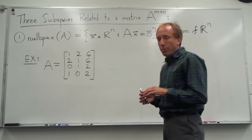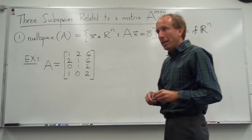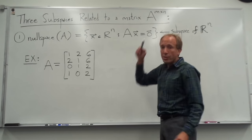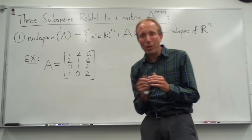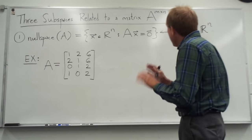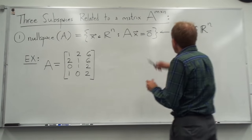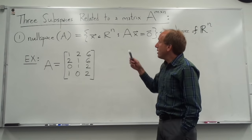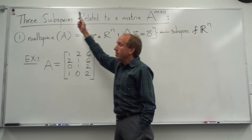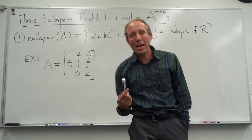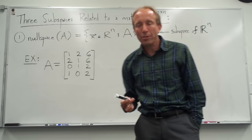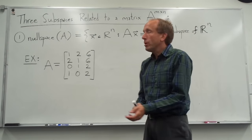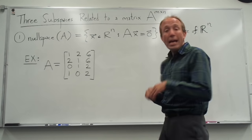Basically what I'm going to explain in just the next few minutes is: if I take any matrix at all — it doesn't have to be a square matrix — if I take any matrix, let's say it's m by n, I can associate three different subspaces to that matrix. There are three subspaces that we think of and associate with any matrix.